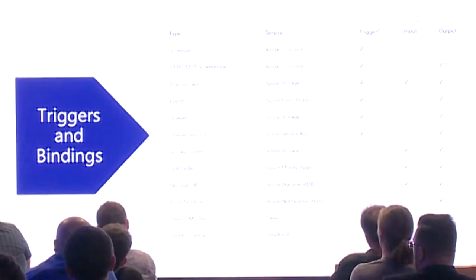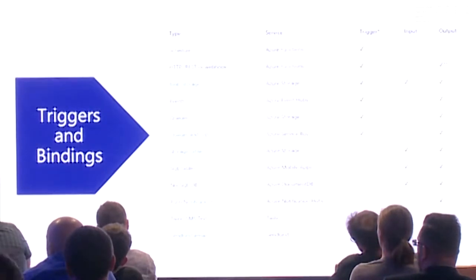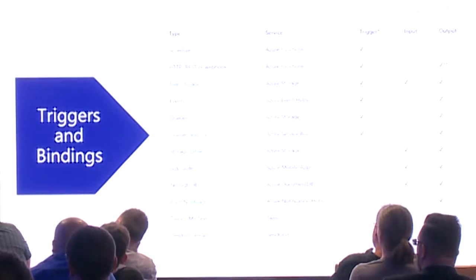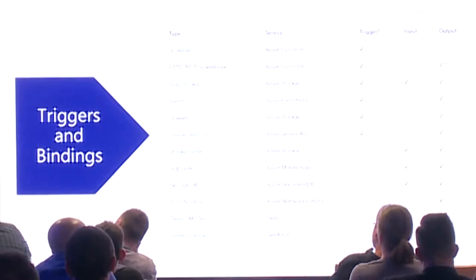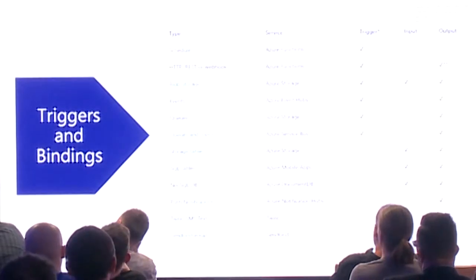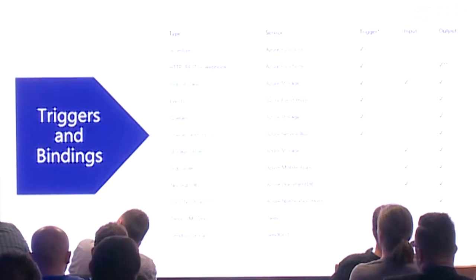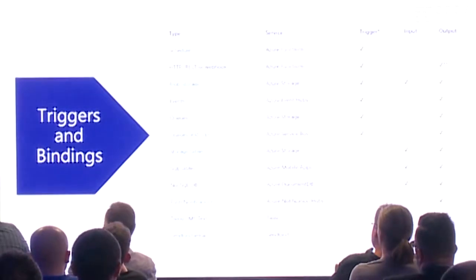A blob storage trigger example: I worked with a partner on a mobile app where every time someone uploaded an image, we uploaded it to blob storage. A function watched that container — every time a new image appeared, it pulled the image, used Cognitive Services to find faces, mapped where faces were, and did an intelligent crop to make sure it didn't crop someone's face. If people aren't uploading images, he's not being billed. We also used service bus for a large-scale project for the Missing Children of Canada Society.